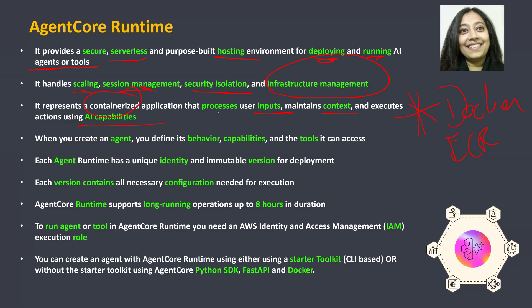When you create an agent using AgentCore runtime, you're essentially defining its behavior, capabilities, and tools that it can access. Each agent that is deployed has a unique identity and an immutable version for deployment, and each version contains the necessary configuration needed for execution. AgentCore runtime also supports long-running transactions, but only up to eight hours — while it's in preview it's eight hours, though it may change later.